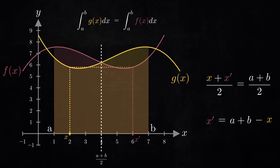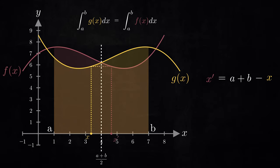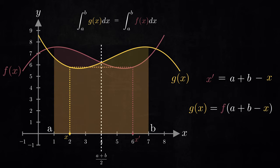And this leaves x prime as a plus b minus x. Notice that this is true for any input x, not just for some specific choice. Therefore, it can be concluded that g is same as f of a plus b minus x, and the area can be expressed as the integral of f of a plus b minus x from a to b.